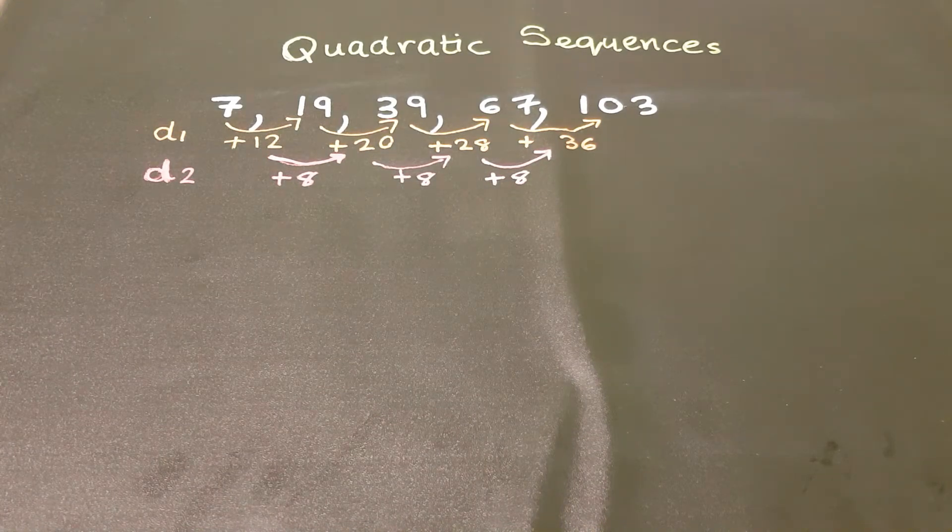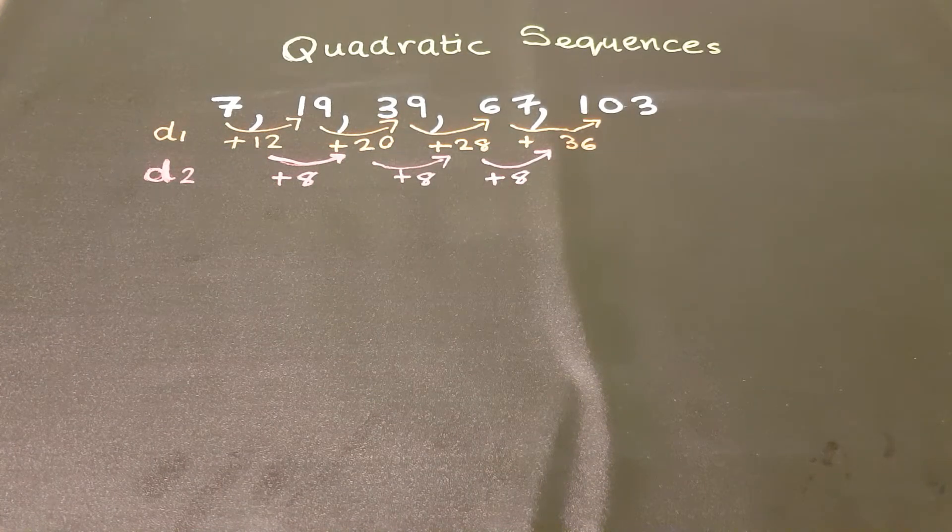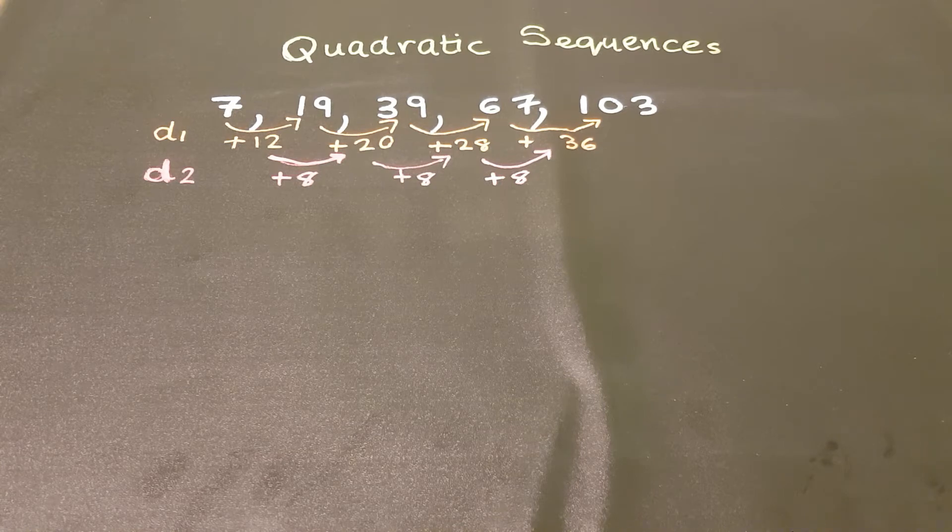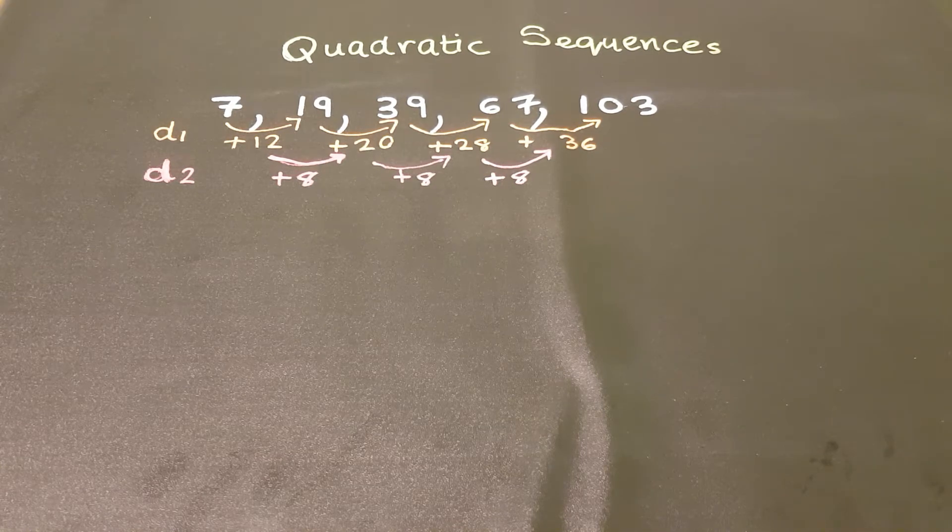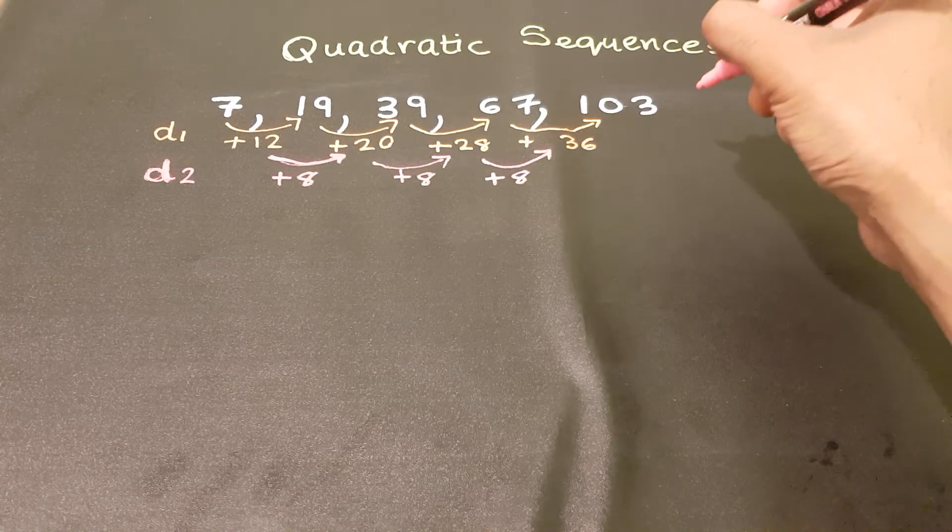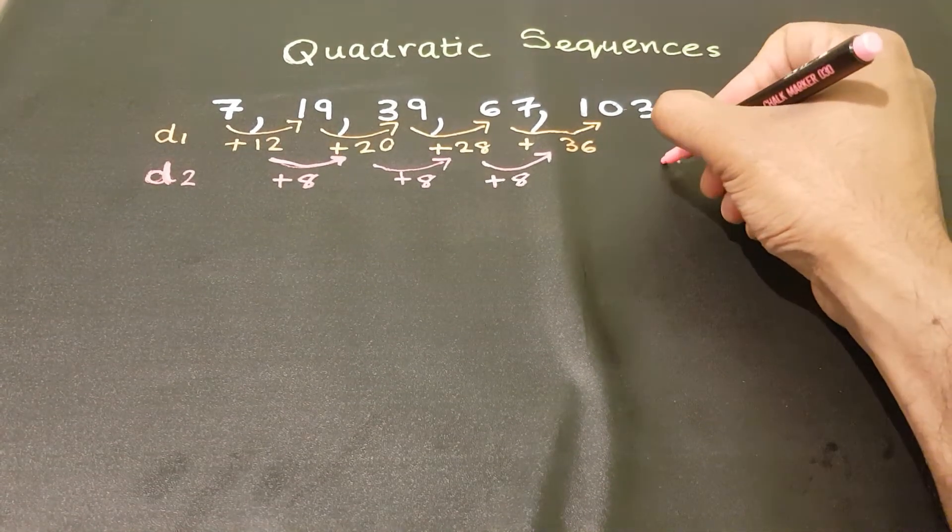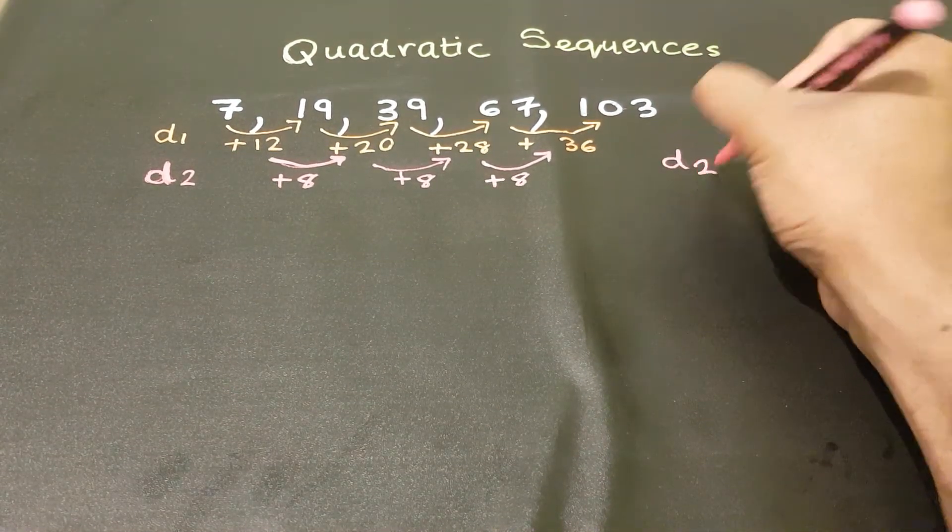If the second difference is all the same, we are dealing with a quadratic sequence. Once we have confirmed that we are dealing with a quadratic sequence, what we need to do next is take our second difference and divide it by 2.